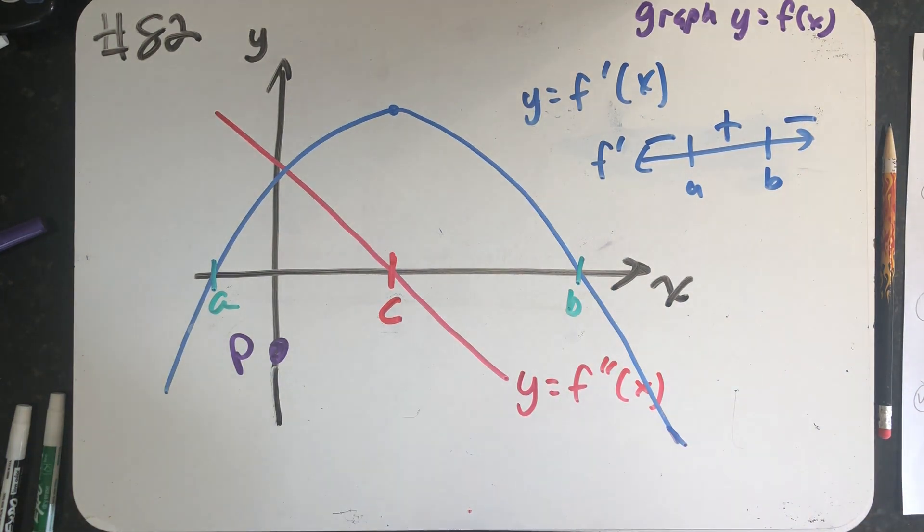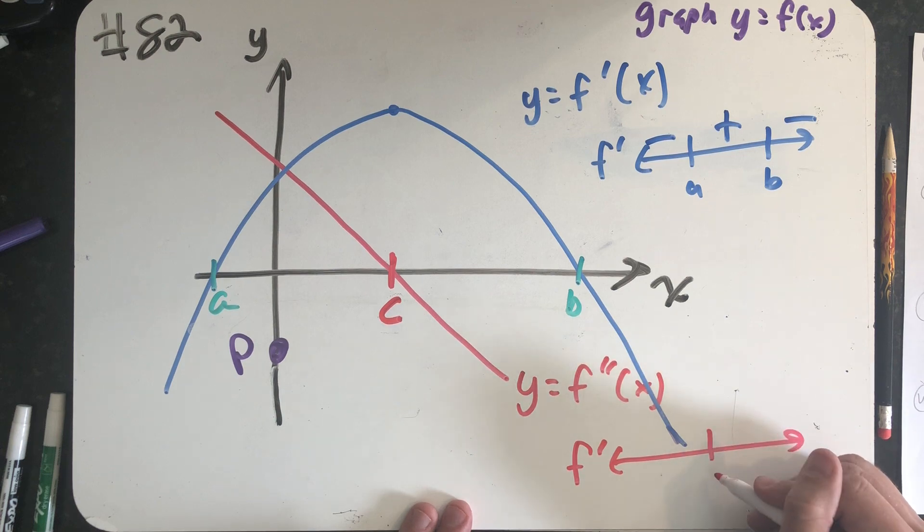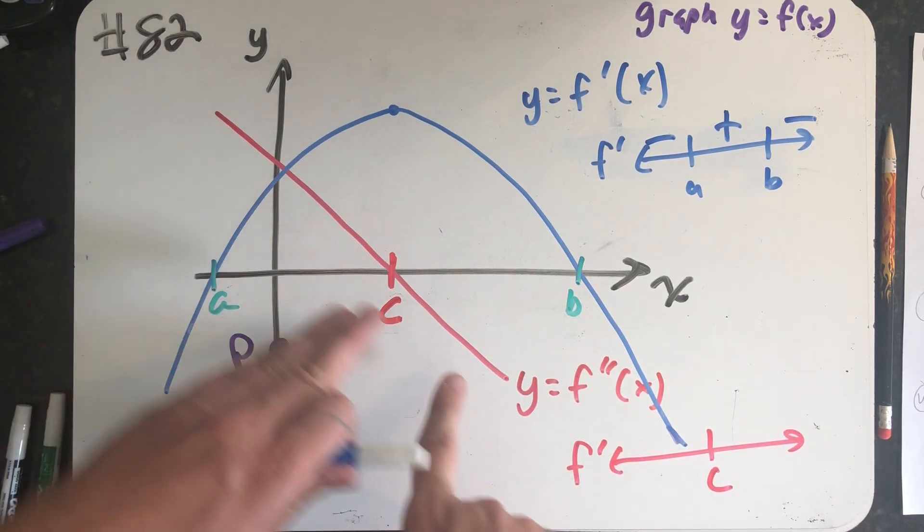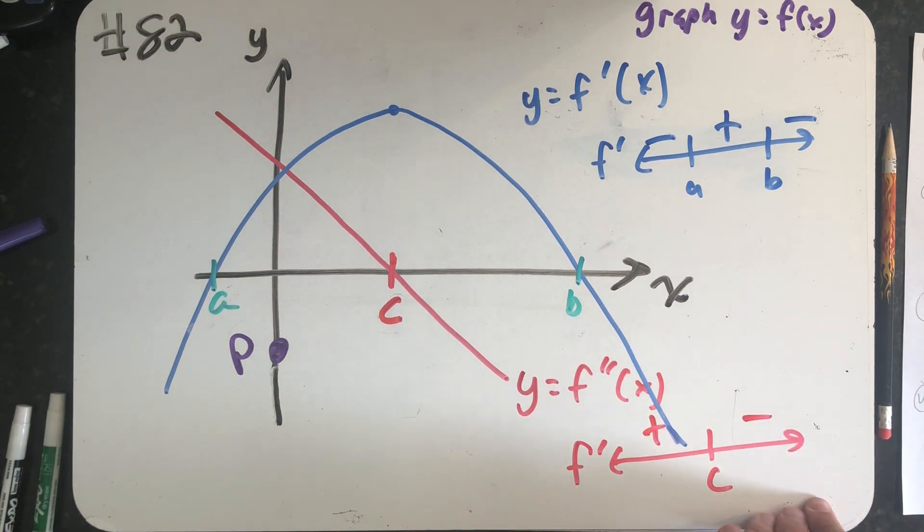I can do a similar number line for the second derivative. My second derivative is positive and then negative, telling me that it's concave up and then concave down. And I should be more specific. I mean the graph of the function. The graph of the function is concave up and then concave down.